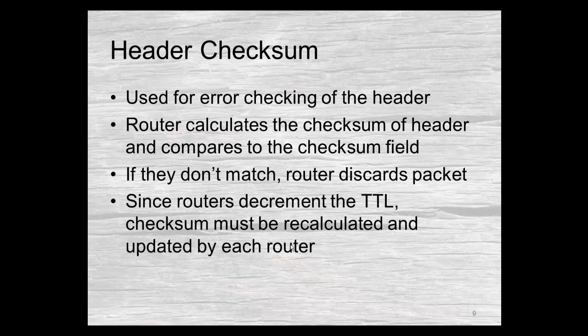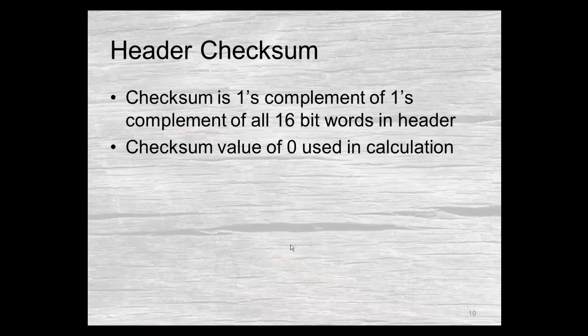The header checksum is used for checking the header. The router calculates the checksum when it receives a packet and compares it to the checksum field; if they don't match it discards the packet. The checksum itself is figured in as a zero because you don't know what the checksum would be until after you calculate the field. Some NAT routers do not recalculate the checksum if it's being sent to the final destination. Because the TTL is decremented at each router it has to be recalculated each time. The checksum is essentially the ones complement of the ones complement of all 16-bit words in the header.